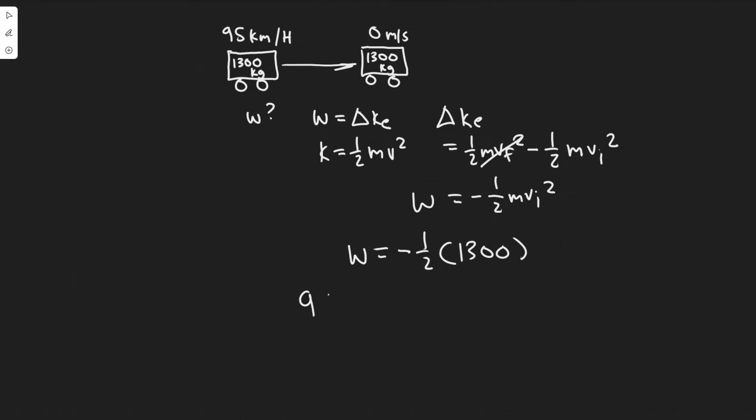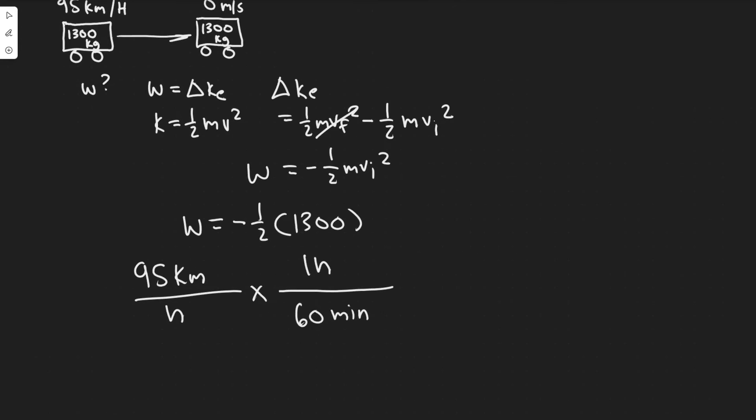So we have 95 kilometers for one hour. We know that one hour is equal to 60 minutes. And then 60, or one minute is equal to 60 seconds. So if we look at this, these will cancel.